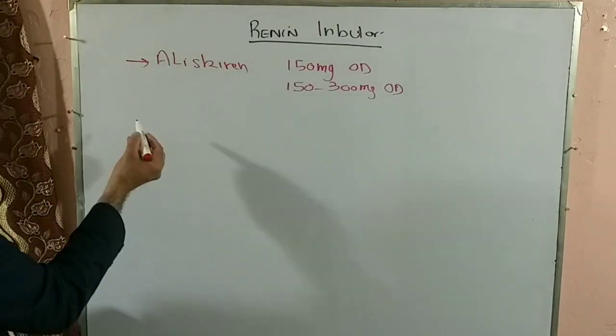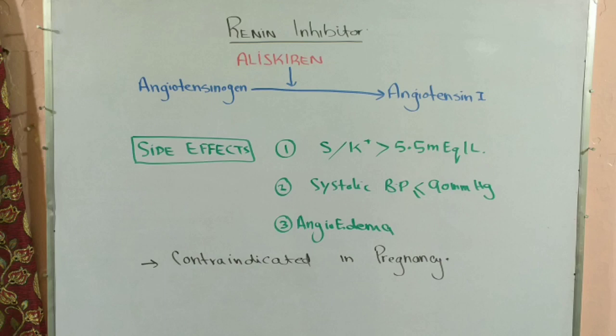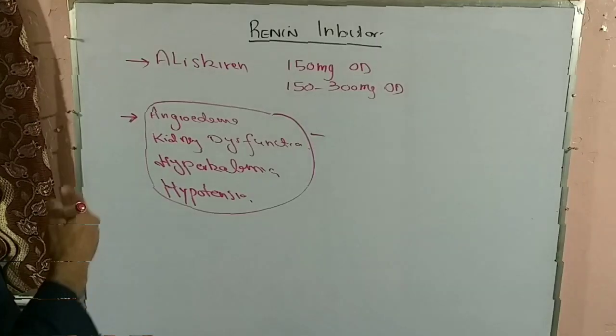Unfortunately, aliskiren has not been in much use in practice because there are more side effects and it doesn't work that well, though theoretically it should work better. Side effects include: it is contraindicated in pregnancy, it can cause angioedema, kidney dysfunction, hyperkalemia, and hypotension. If a patient on aliskiren doesn't get much benefit but develops side effects, it is better not to use it.